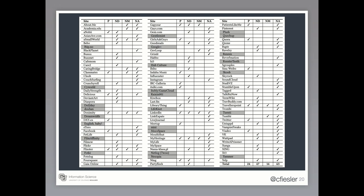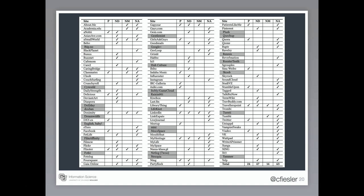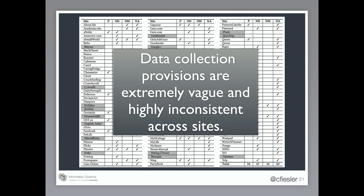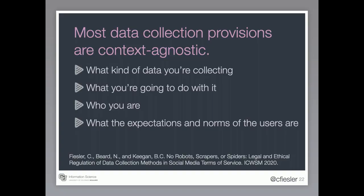YikYak is a location-based ephemeral social networking site — anonymous, location-based, the data goes away. You can imagine why YikYak might not want people creating archives from a website where the expectation of users is that data is going away. But do they say that in their terms of service? No, they almost never do. Terms of service scraping provisions are super inconsistent and super vague — just "don't scrape." Things that don't matter in those terms include what kind of data, what you're going to do with it, who you are, what the expectations and norms of users are — basically all of the things that actually matter for an ethical decision.